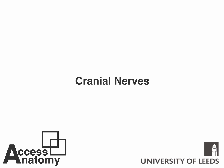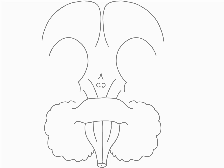In this screencast we're going to look at the location of the cranial nerves on the ventral brain and brain stem. On the screen we can see a ventral view of the brain and the brain stem. Here we have the two frontal lobes and the two temporal lobes.